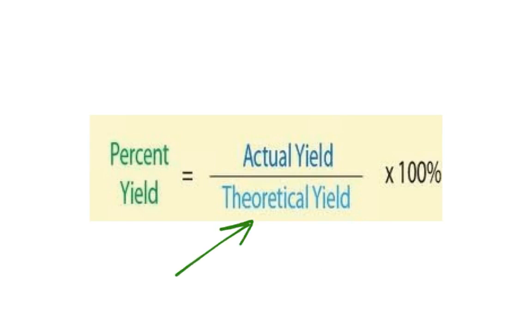And again, just as a reminder, theoretical will always be bigger. If it's not bigger, then you're not doing it the right way. We'll then multiply that value by 100 to get our percent yield.